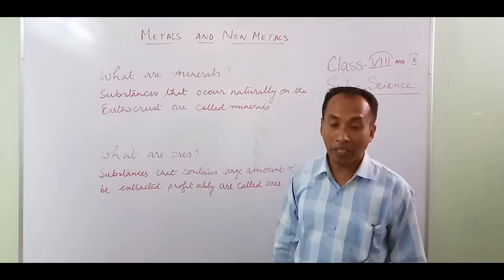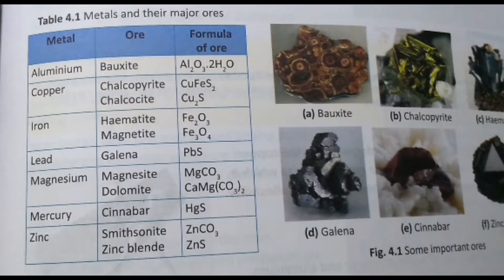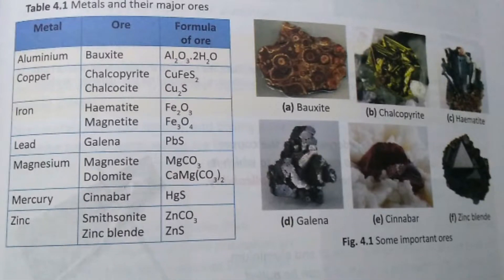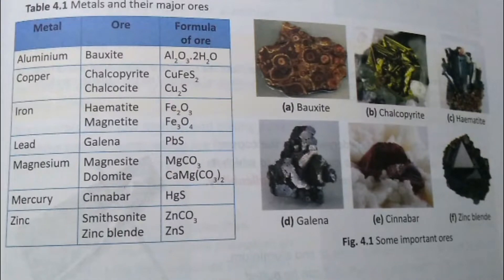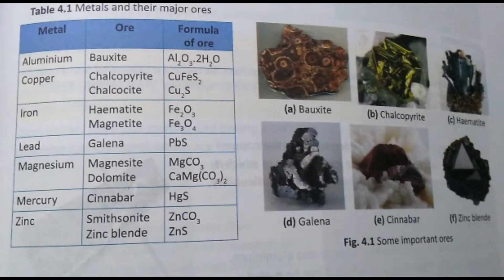Different kinds of ores are given in the table in your book. Aluminum: ore is bauxite. Copper: chalcopyrite and chalcocite. Iron: hematite, magnetite. Lead: galena. Magnesium: magnesite and dolomite. Mercury: cinnabar. Zinc: smithsonite and zinc blende — formula ZnS and ZnCO₃. All formulas are given in your book.